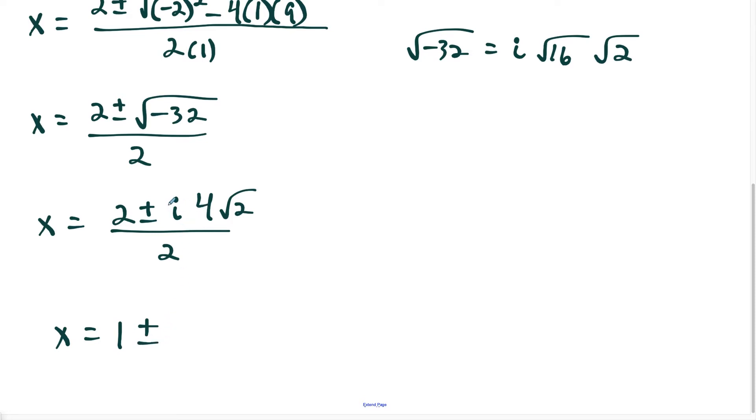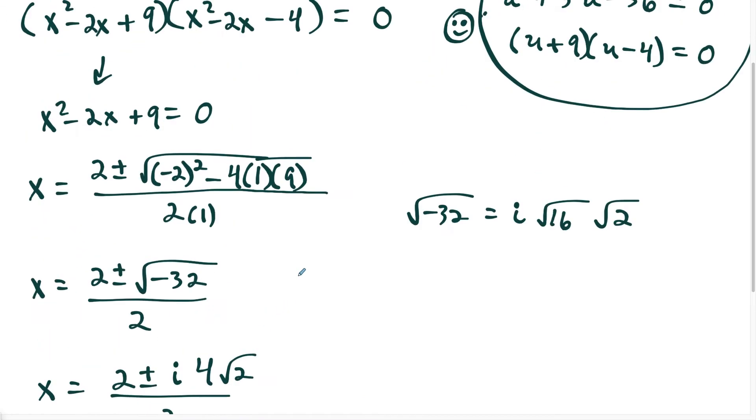I'm going to have 2 divided by 2 is 1 plus or minus, and think of this as 4i radical 2. So if I do 4i divided by 2, that's going to give us 2i square root of 2. So this is our first set of answers.